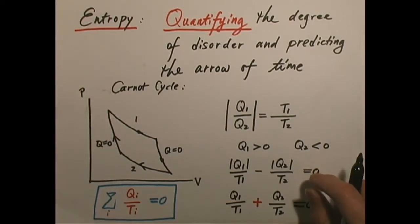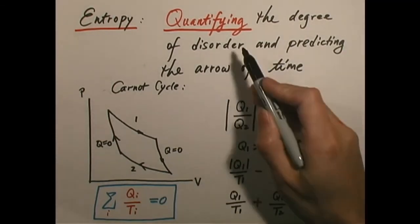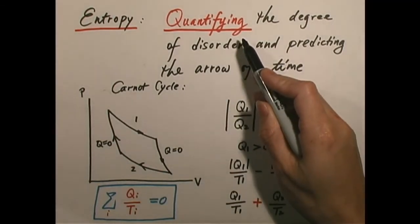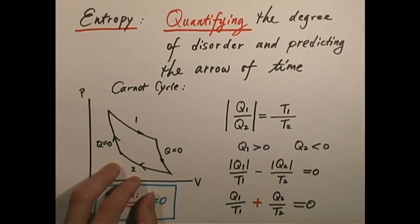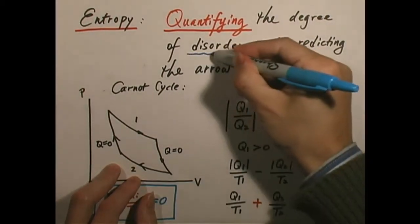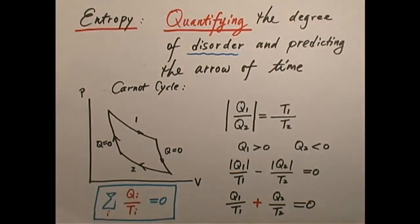Entropy is a quantity that allows one to quantify — not just qualify, but quantify — the degree of disorder or randomness in a system. And in doing so, we can predict the arrow of time. We can point out why certain things are reversible and certain things are irreversible. Let us first derive the concept of entropy from a thermodynamic point of view.